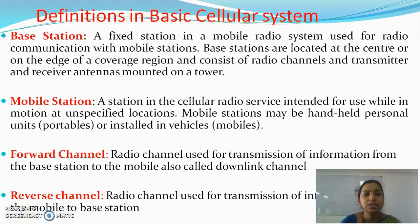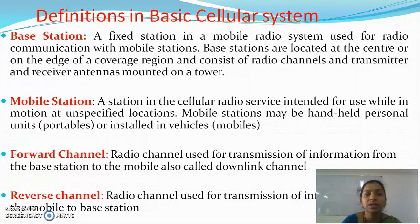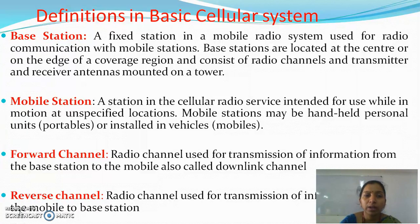This lecture is mainly regarding definitions in a basic cellular system. The basic definitions in a cellular system are base station, mobile station, forward channel, and reverse channel. A base station is a fixed station in a mobile radio system used for radio communication with mobile stations. Base stations are located at the center or on the edge of the coverage region, and consist mainly of radio channels, transmitters, and receiver antennas mounted on a tower.